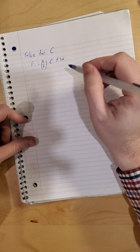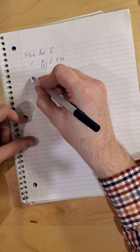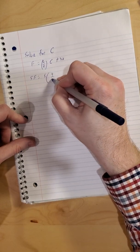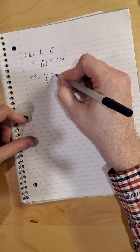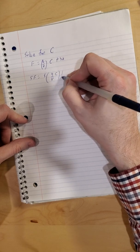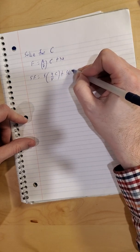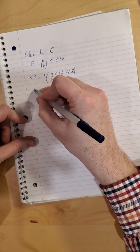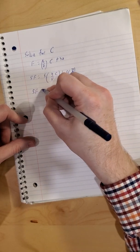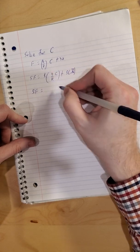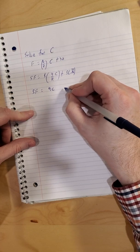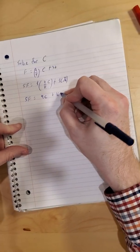So we have F is nine-fifths times C plus 32. Our goal is to get C by itself. So we can clear the fraction. We'll multiply both sides by five. So left hand side, five times F. Right hand side, five times one is one, one times nine C is nine C. So five F is nine C plus 160.